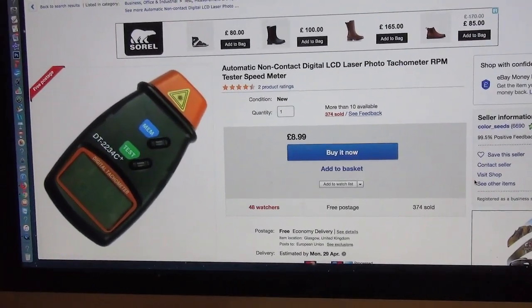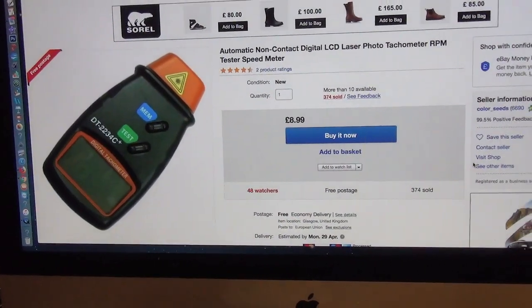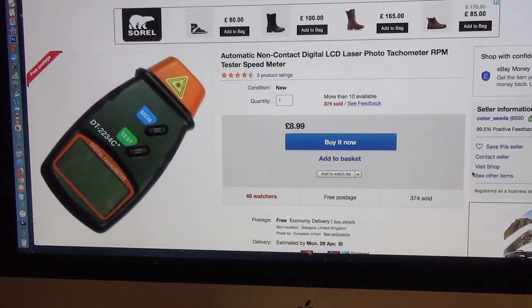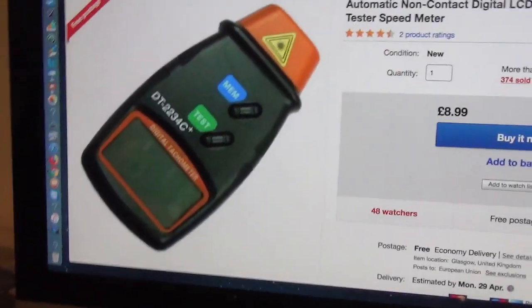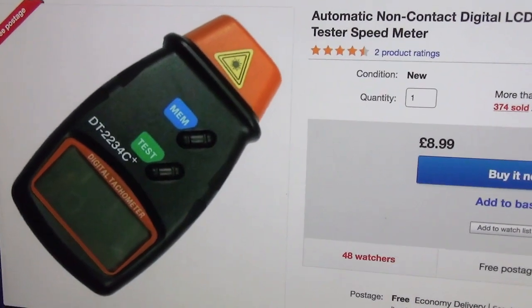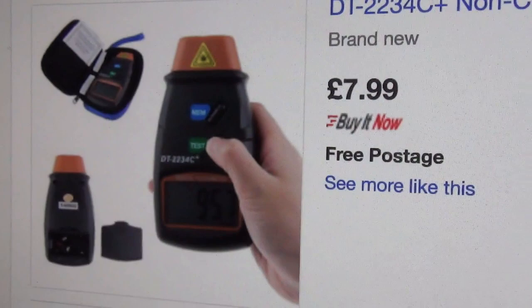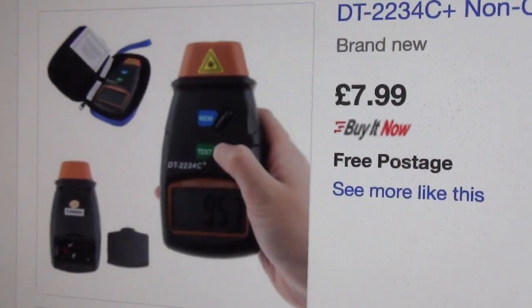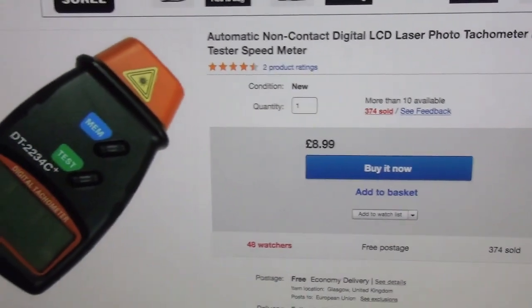I decided that we need a tachometer to check the speed of the machine, as we need to get up to 32 frames a second. This was one possibility. It's one that works optically and you point it at a spot on the moving part. Quite a few of these for sale on eBay. Different sellers. Cheap enough and probably accurate enough.